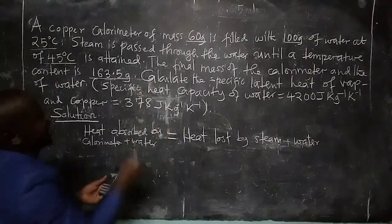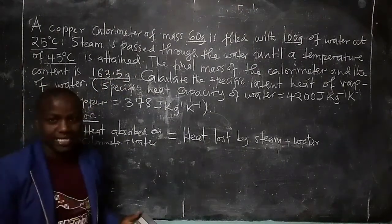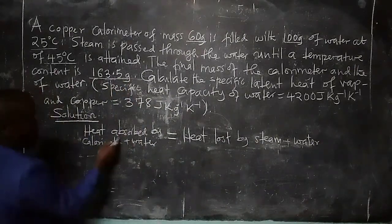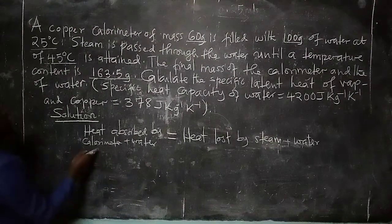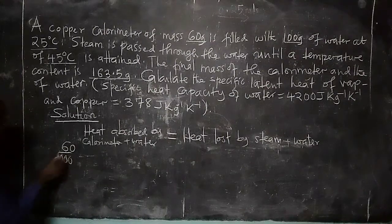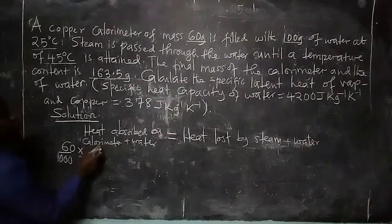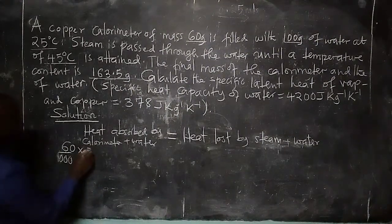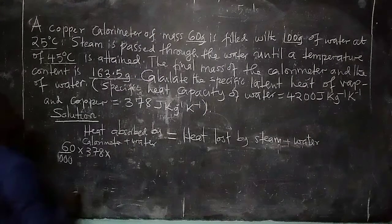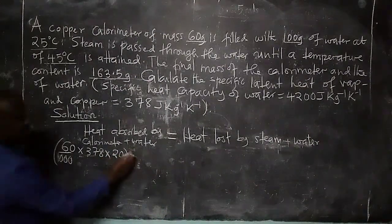We can find the mass of steam that condensed: initially we have 160 grams and finally 163.5 grams, so 3.5 grams of steam condensed. The mass of steam is therefore 3.5 grams. Now we calculate heat absorbed by the copper calorimeter: mass of 60 grams divided by 1000 to convert to kilograms, times specific heat capacity of copper which is 378, multiplied by change in temperature of 20 degrees.